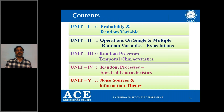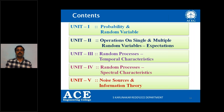When we move into the contents of the subject, the first unit covers basic probability and a single random variable — basic probability concepts and the definitions and properties of a single random variable. Unit two covers operations that can be performed on a single random variable and multiple random variable cases. Unit three covers random process temporal characteristics. Unit four covers random process spectral characteristics. Unit five covers noise sources and information theory.